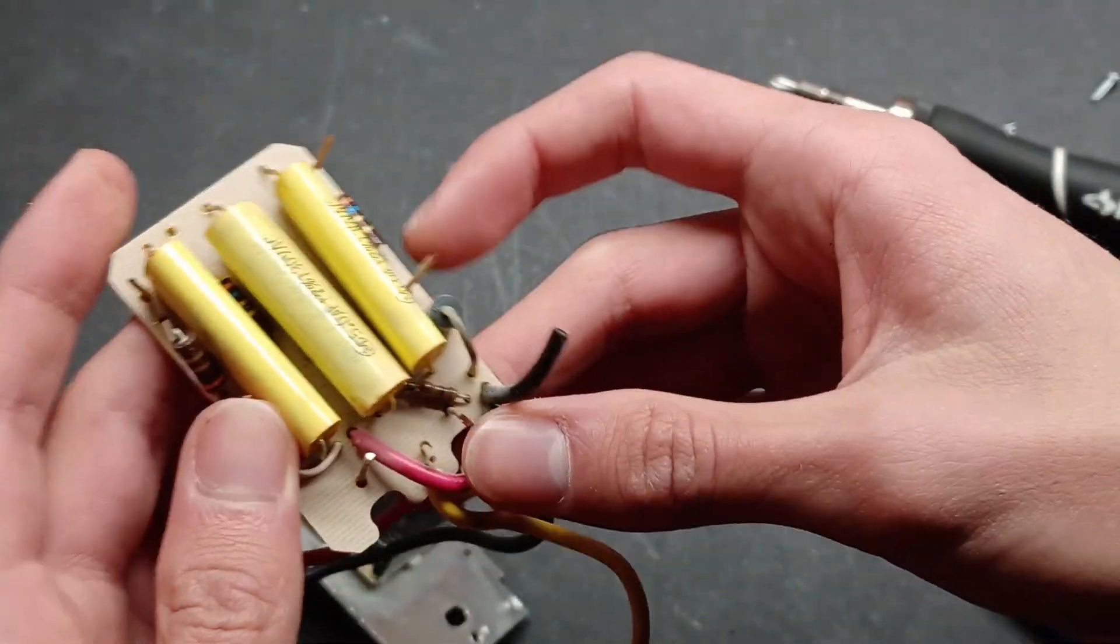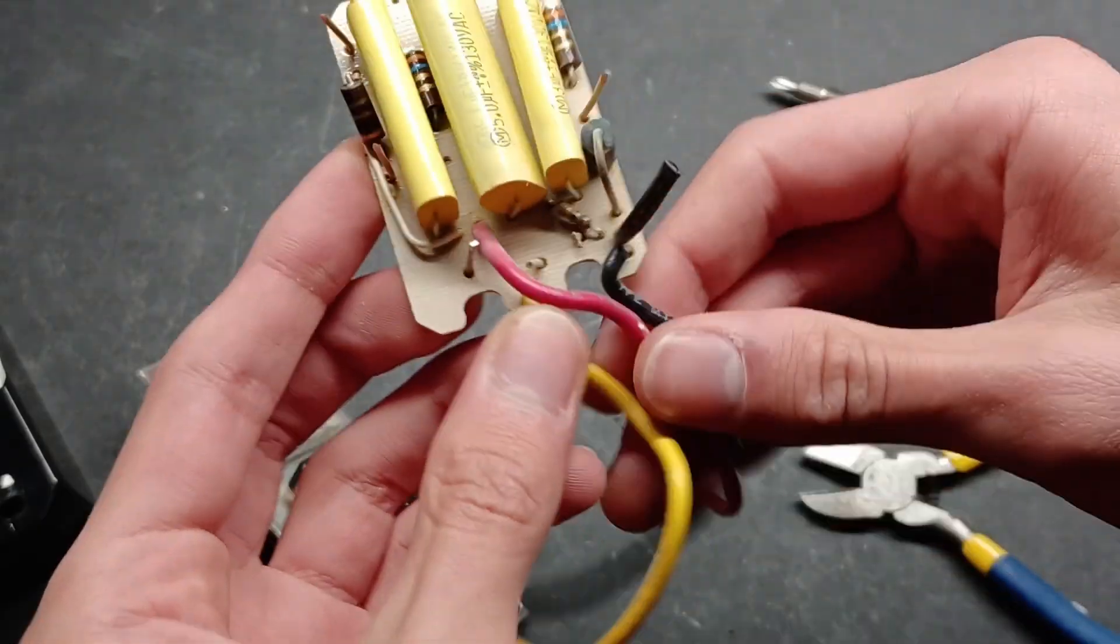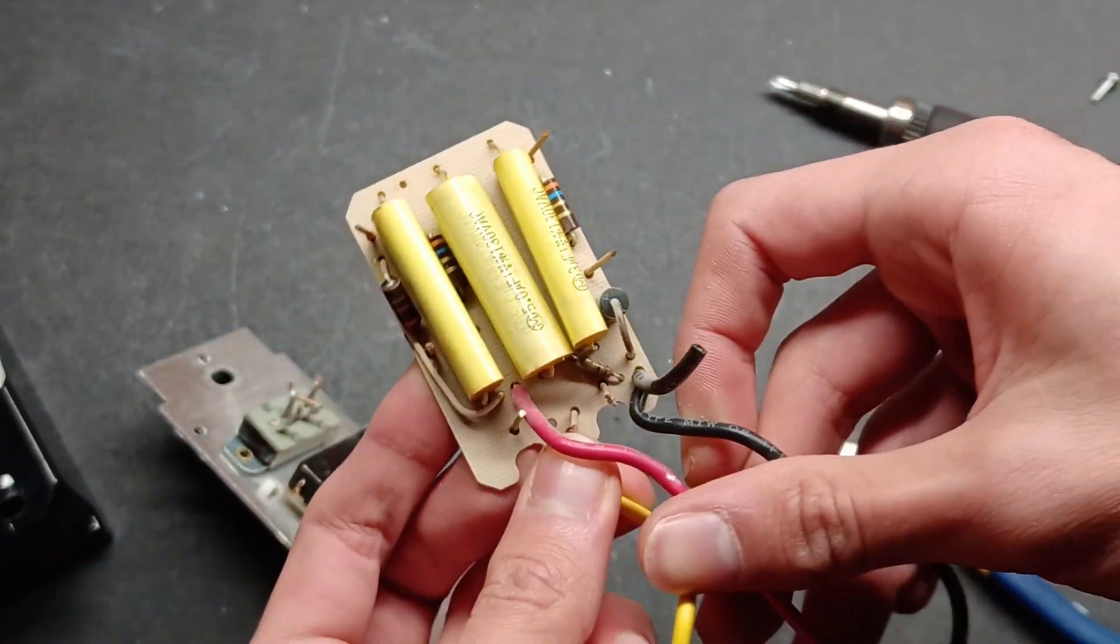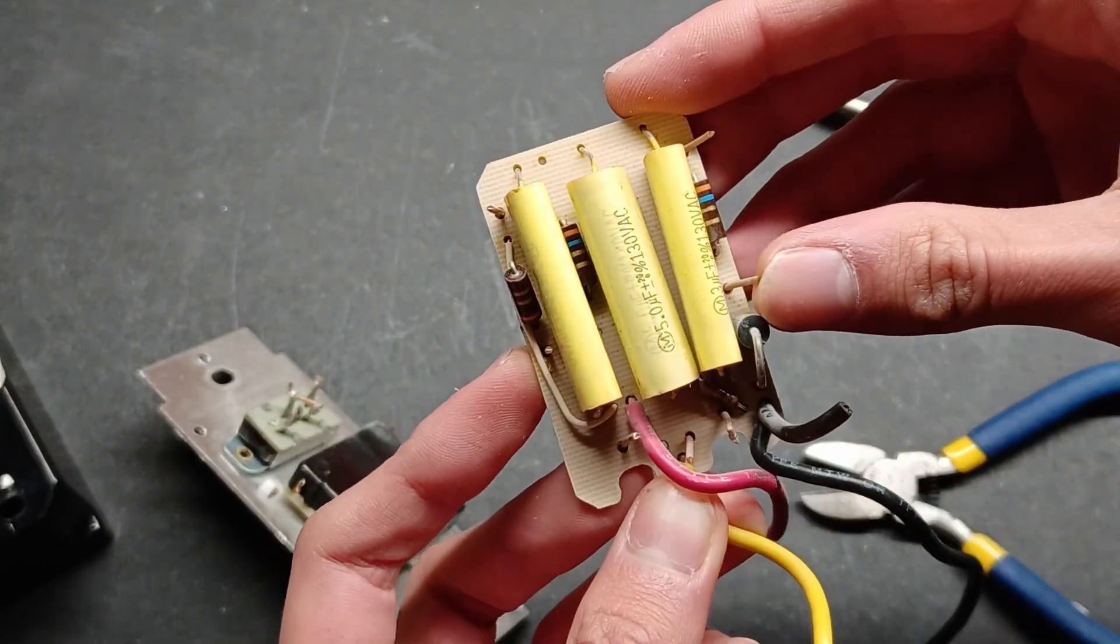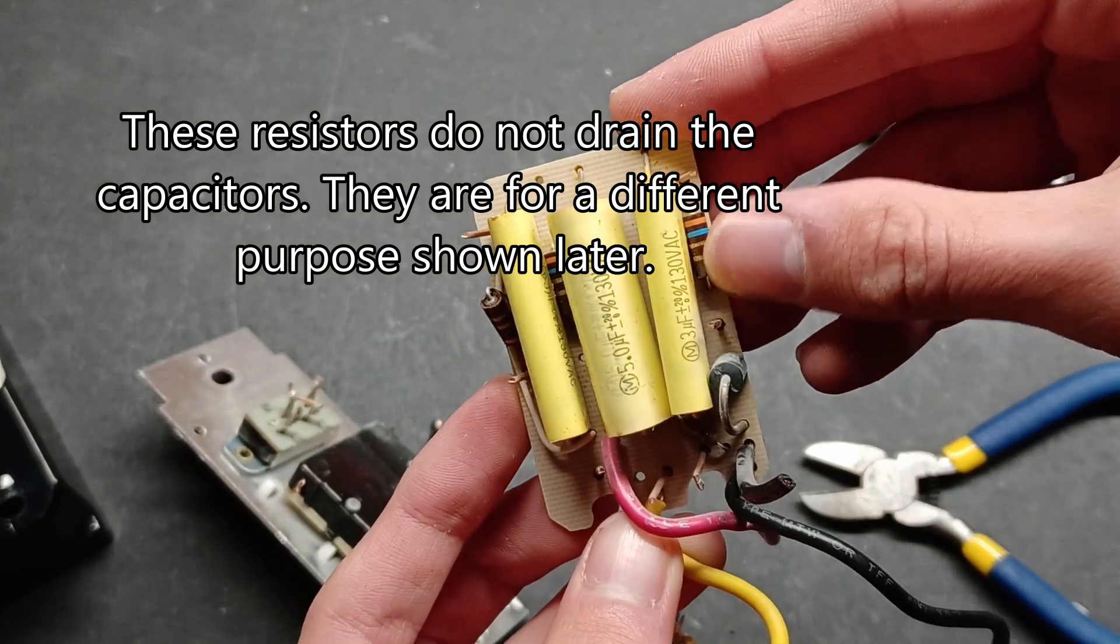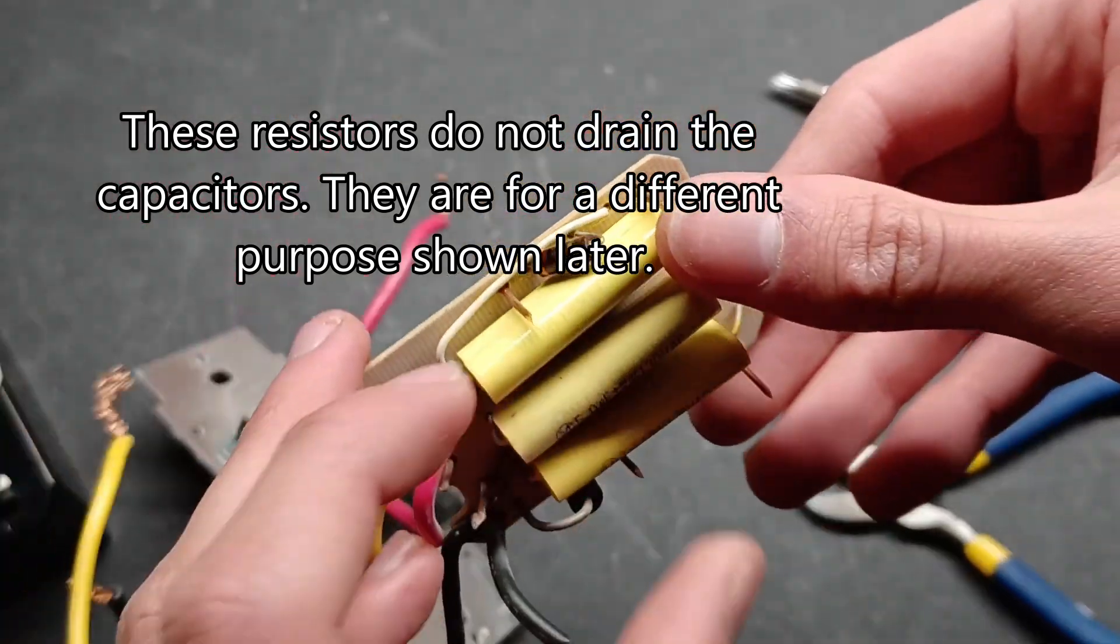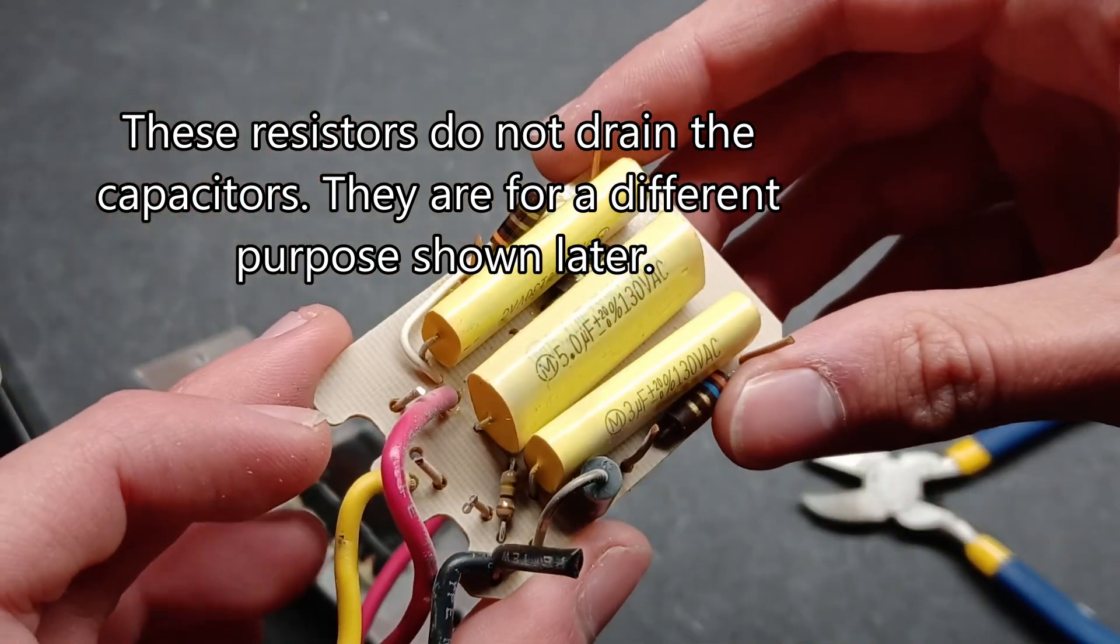Now these capacitors are used in the fan controller to limit the power to the fan, thus running at a slower speed. And these resistors are to drain the capacitors slowly so that they don't hold a charge.